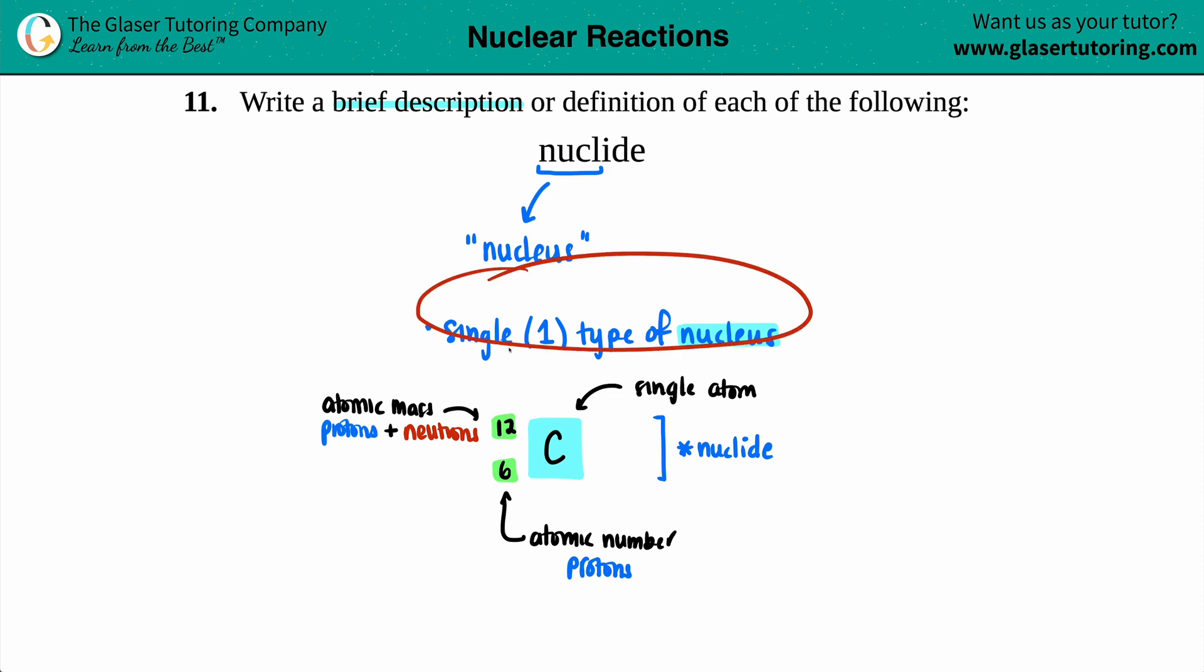That's what a nuclide is. It's just a single type of nucleus where you just denote what the atom is, how many protons you have, aka the atomic number and the atomic mass. And that's it. I hope that helped.